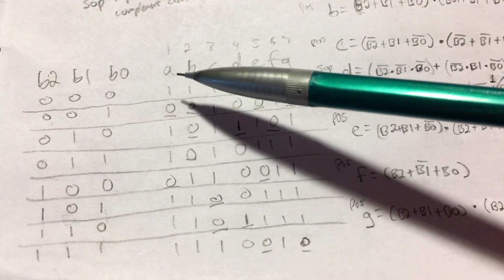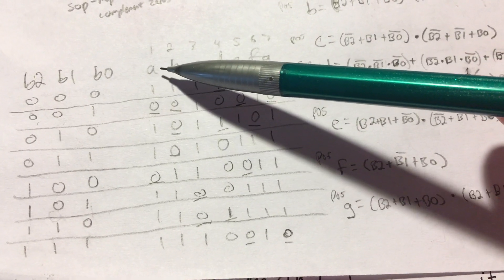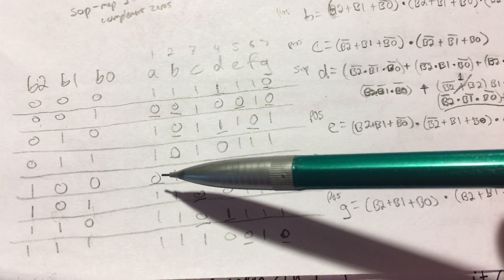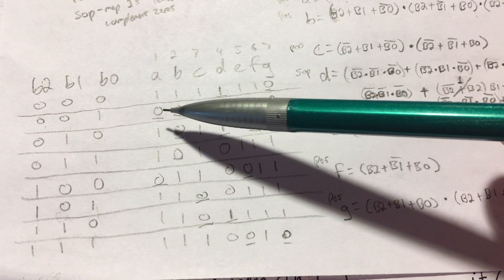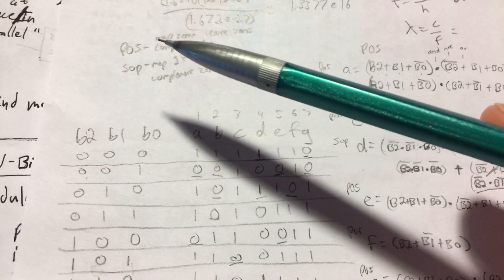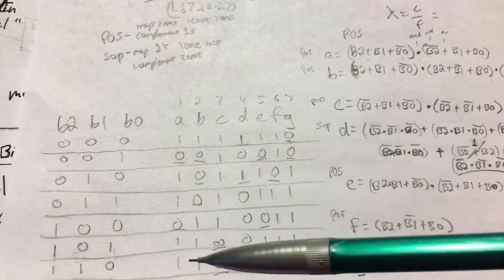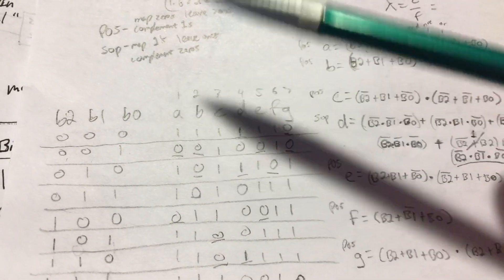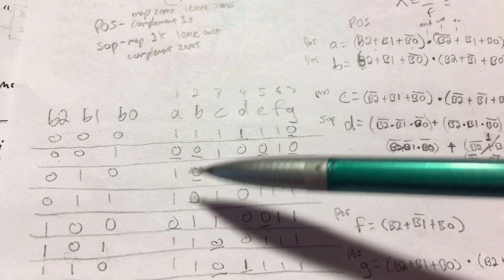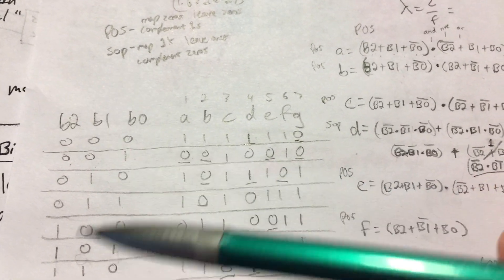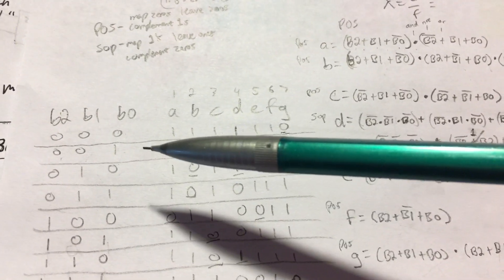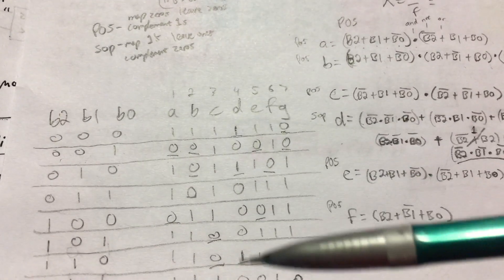First, for example, we took A. There's only two zeros. So we're going to map the two zeros and choose product of sums. Product of sums requires you to map the zeros. And because there's less zeros, we're going to choose product of sums. And in product of sums, you map these zeros, which corresponds to these values, inputs. And you're going to complement the ones or invert the ones.